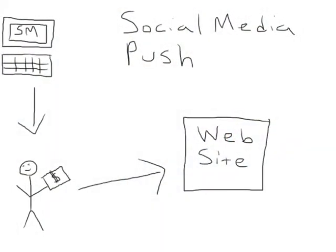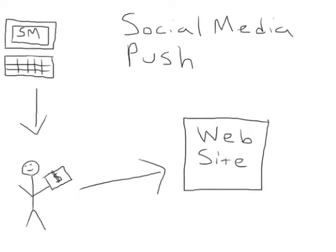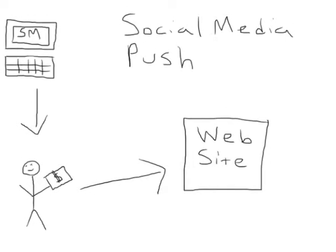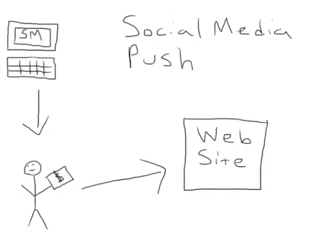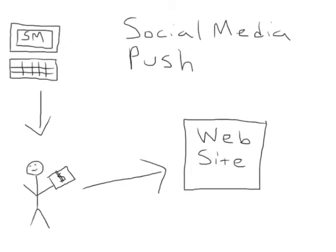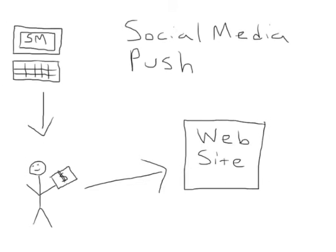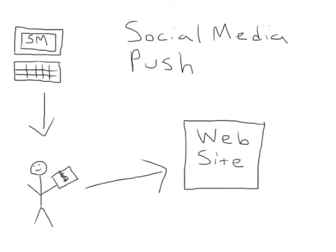A push plan through social media can be used to promote the homepage or website of the company. The different avenues of social media including Facebook, Twitter, and a blog should all be used for the purpose of driving traffic to the homepage in an effort to increase business. An example of this would be a blog about a relevant topic to the business with links to the homepage or specific products.